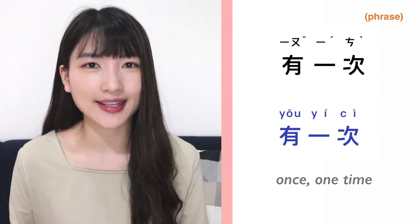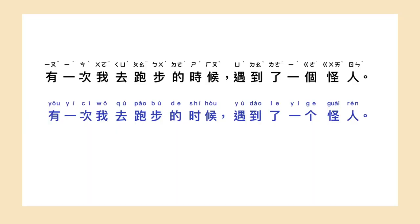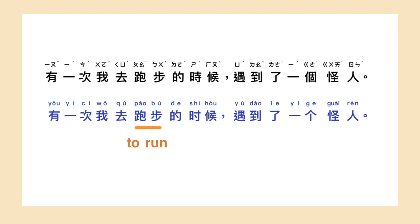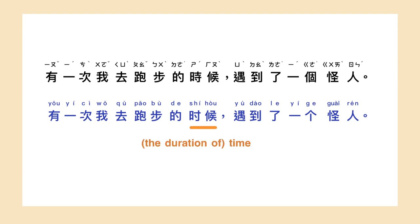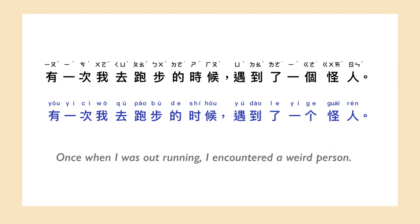Now let's learn several useful words for starting your story. To start, you may want to say 'once' or 'one time'. In Chinese, you would say 有一次. For example: 有一次我去跑步的时候,遇到了一个怪人。 Once when I was out running, I encountered a weird person.